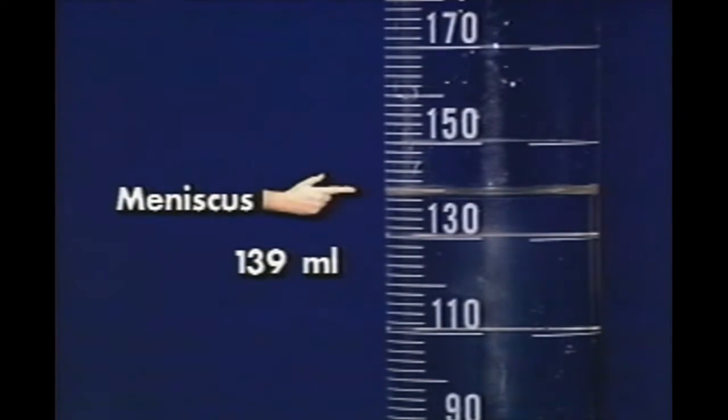To determine the level of the fluid, a scientist looks at the bottom of the curved surface. This is called the meniscus. The mark closest to the meniscus is the reading for that liquid.